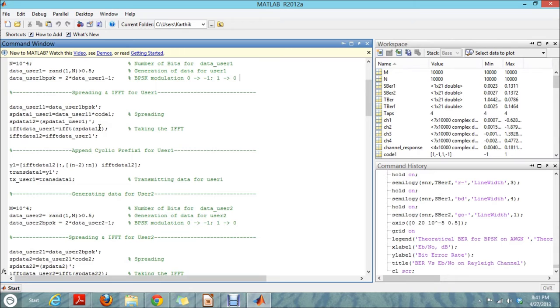And we take the FFT. And the reason we do this is because MCCDMA uses the inverse Fourier transform to divide the bandwidth into orthogonal overlapping subcarriers. And each of the subcarriers are modulated by a single chip.